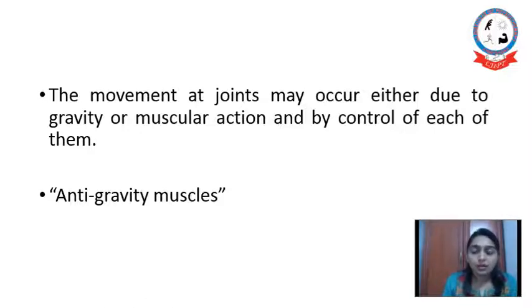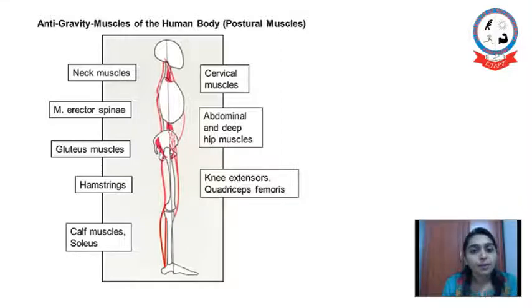Anti-gravity muscles are the muscles which help us to stand against gravity or keep our body erect against gravity. And they are continuously contracting in an isometric way. Here are some of the examples of anti-gravity muscles of human body.